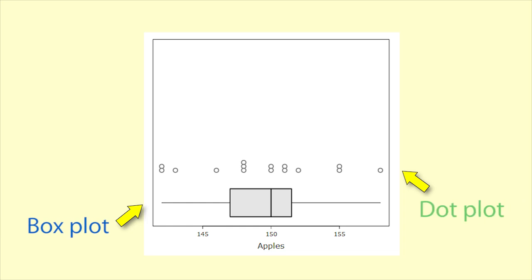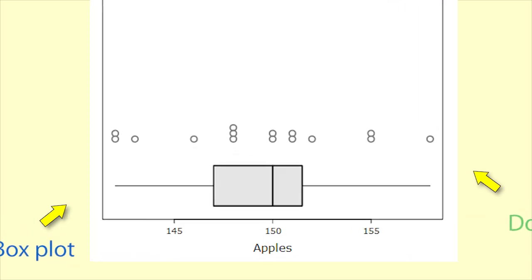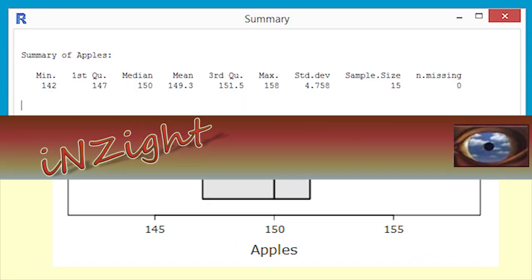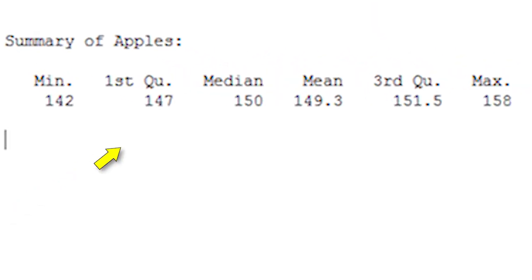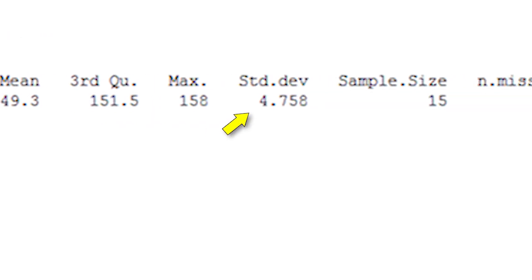This combination boxplot and dotplot shows the distribution of the sample. We use Inzite to get these summary statistics. We can see the mean value of 149.3 grams, the standard deviation of 4.758, and the sample size of 15.